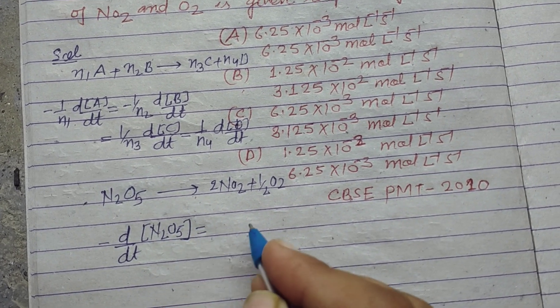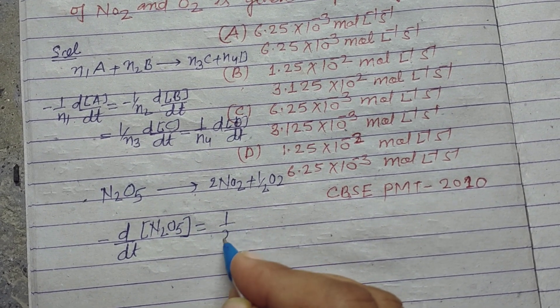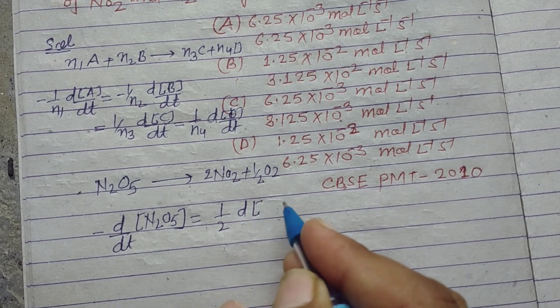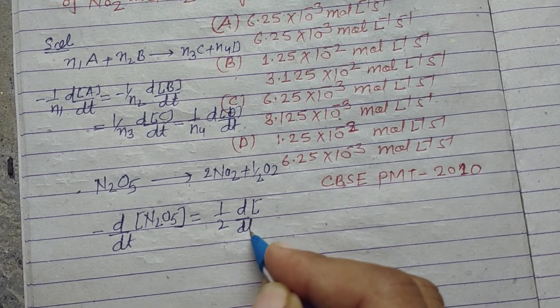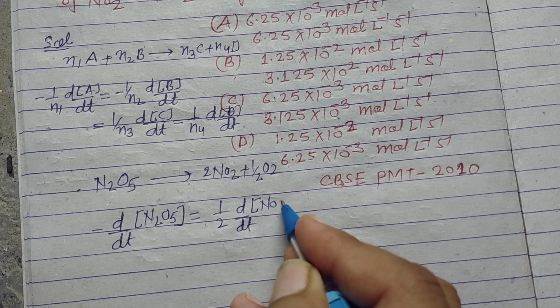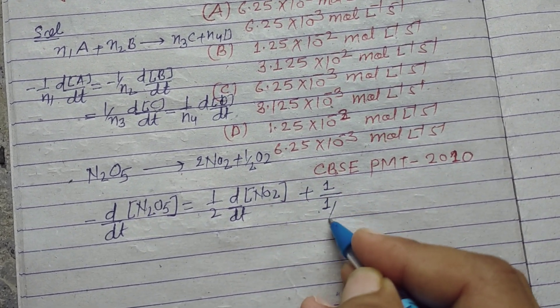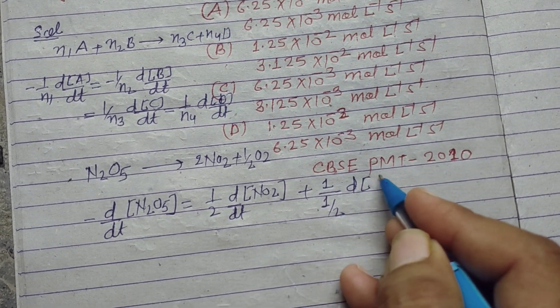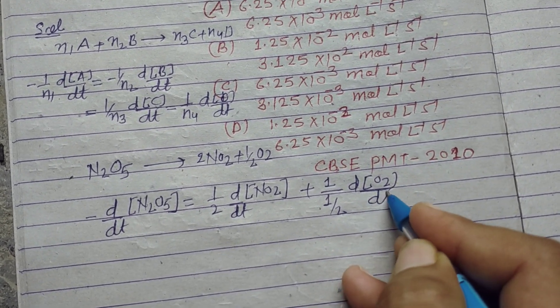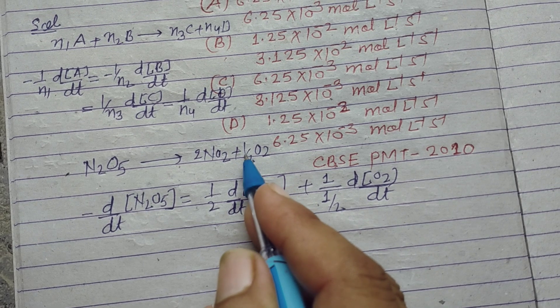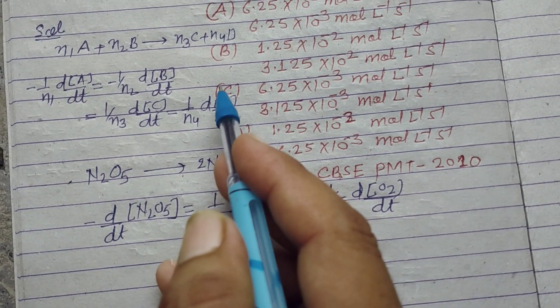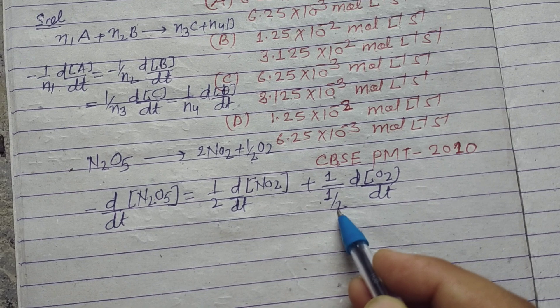equals 1/2 d[NO2]/dt equals 1/(1/2) d[O2]/dt, because here the coefficient is 1/2, so we take it 1 upon 1/2.